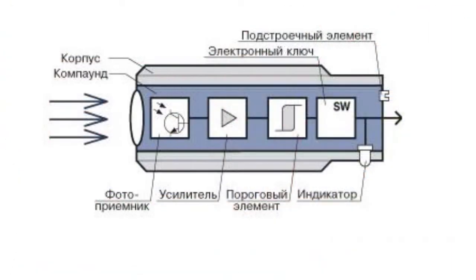The receiver consists of an optical system which forms a radiation pattern and, if necessary, performs a polarized selection, a photo detector which receives optical radiation and converts it into an electric signal, and an amplifier for magnifying the input signal to a necessary value.